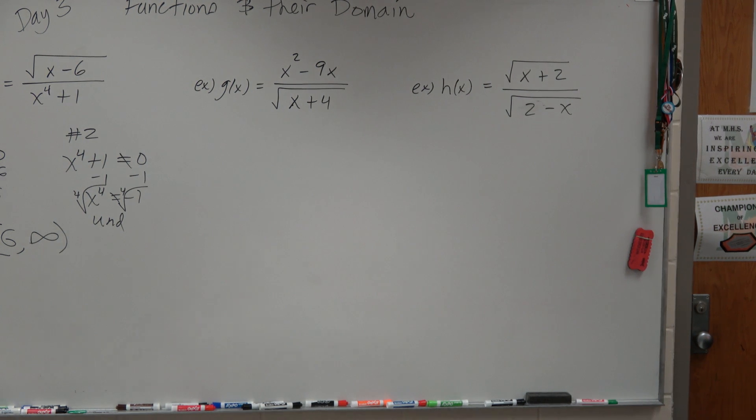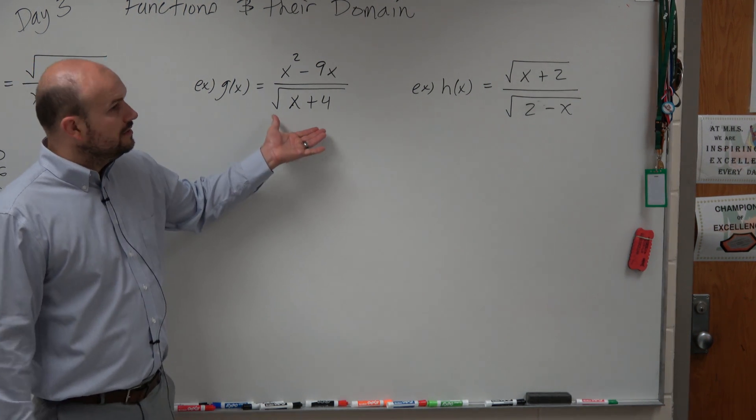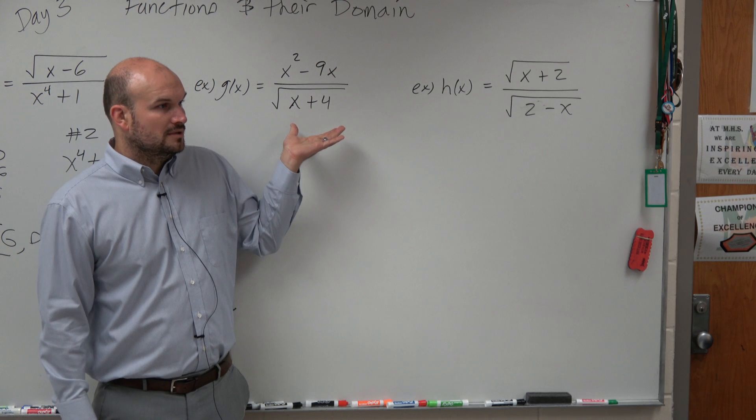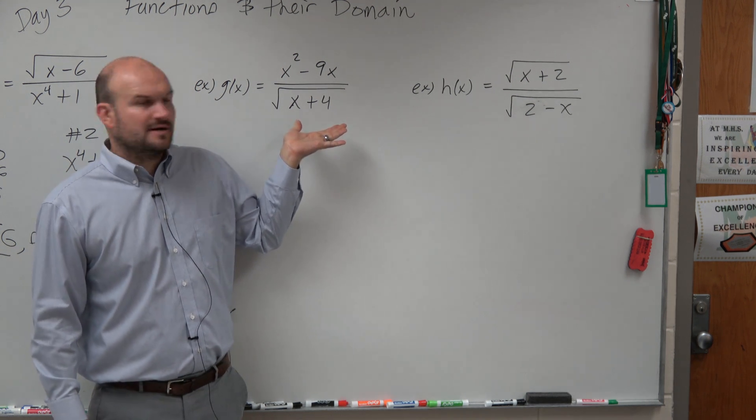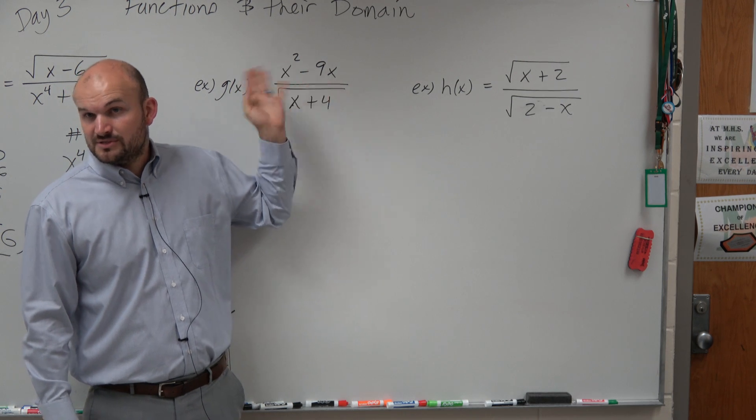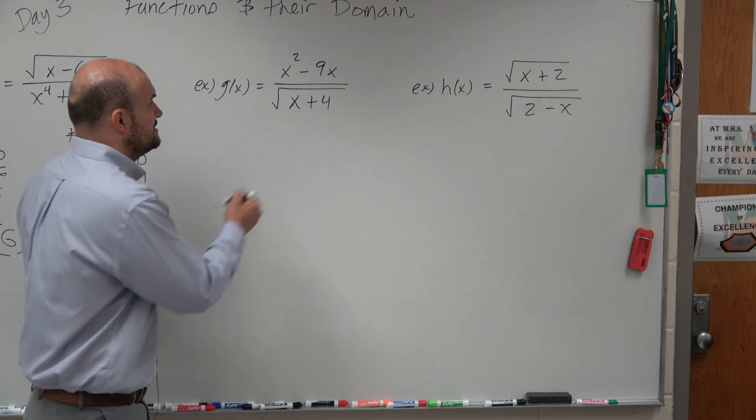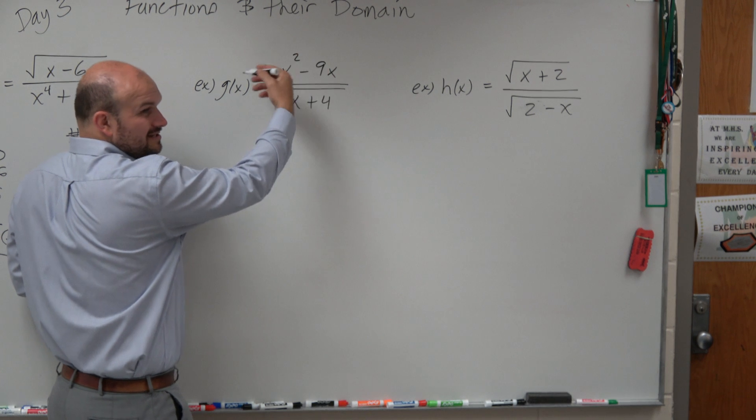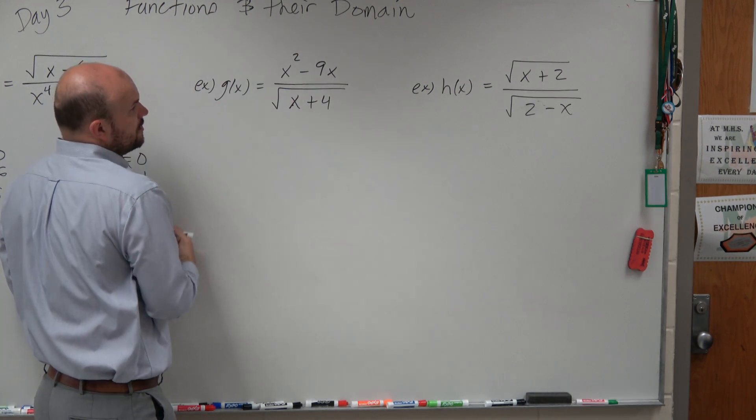So on the second one, now we have an interesting thing here. We don't have any restriction in the numerator. There's no radical in the numerator, so we don't really care what's in the numerator. Remember I showed you up there, like on Desmos, it doesn't matter what's up there. It's no restrictions, at least what we're dealing with.